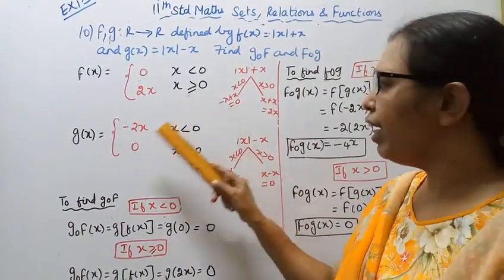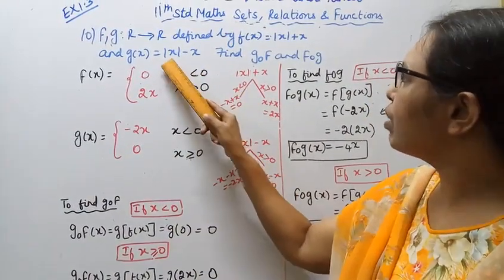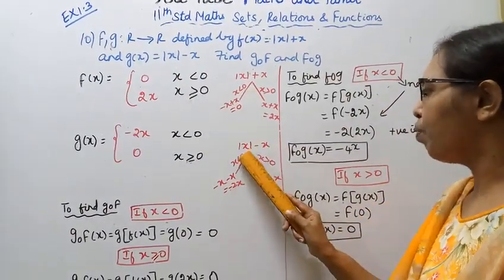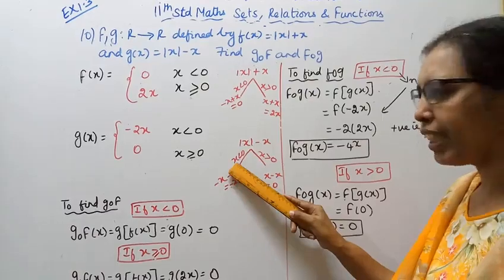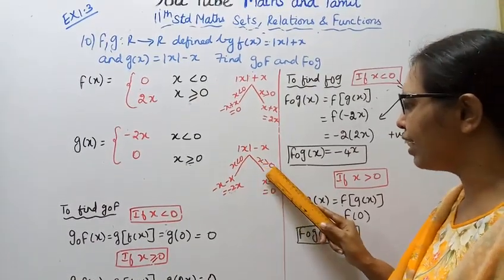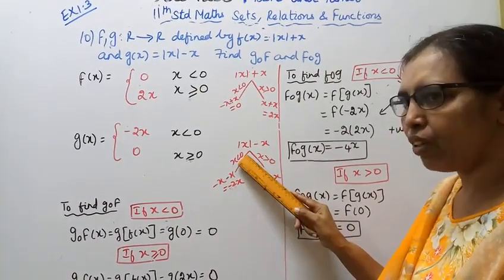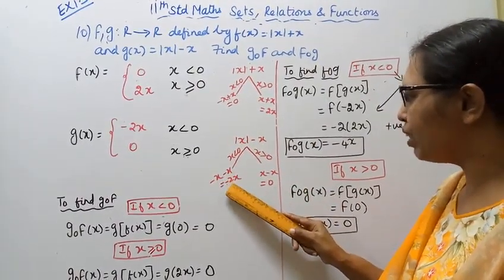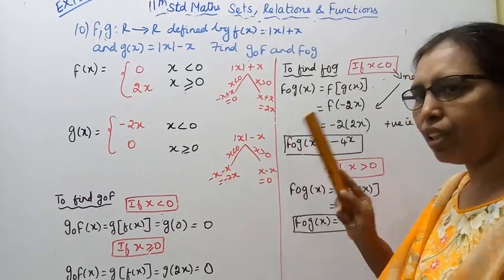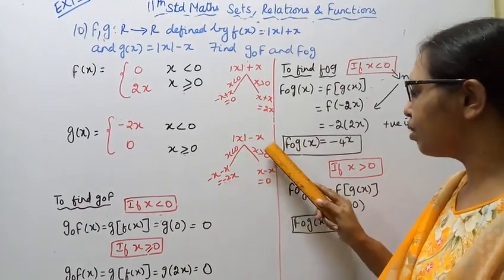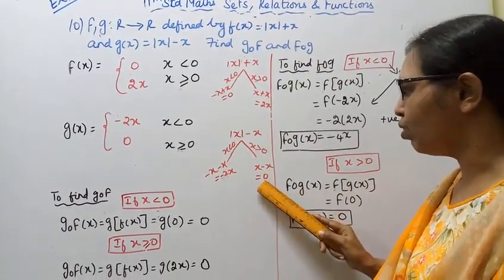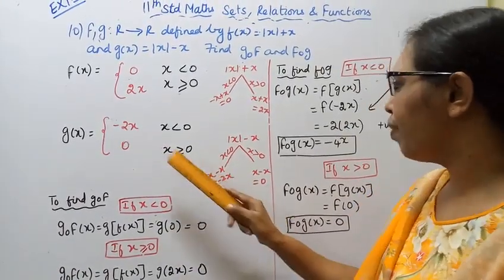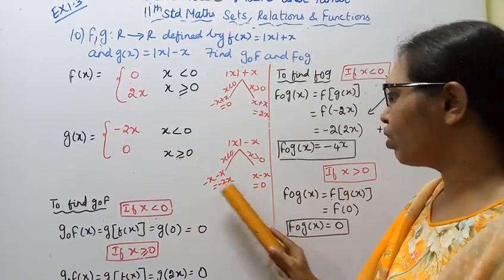So f(x) equals 0 when x < 0, and 2x when x ≥ 0. For g(x) = |x| - x: when x is less than 0, g(x) = -x - x = -2x. When x is greater than or equal to 0, g(x) = x - x = 0.